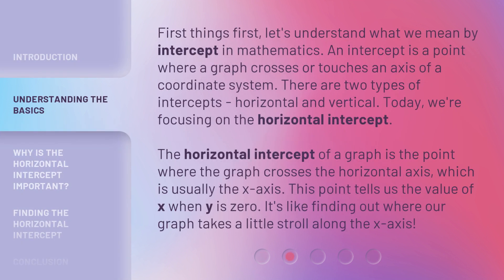First things first, let's understand what we mean by intercept in mathematics. An intercept is a point where a graph crosses or touches an axis of a coordinate system. There are two types of intercepts - horizontal and vertical. Today, we're focusing on the horizontal intercept.